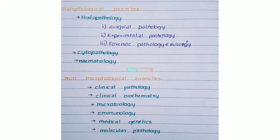The second morphological branch is cytopathology, which deals with cells and tissues, and hematology. These three together deal with morphology. The second subdivision is the non-morphological branches, which include clinical pathology, clinical biochemistry, microbiology, immunology, medical genetics, and molecular pathology.